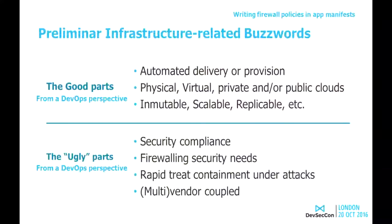From a DevOps perspective, the preliminary infrastructure-related buzzwords — the good parts — are that infrastructure can be automatically delivered and provisioned. We have a lot of tools for making it immutable by means of containers. We can apply several approaches, and we can have a lot of kinds of infrastructure like physical, virtual, and we can make a lot of combinations. So it's very cool. It's very cool from a DevOps perspective because we have a lot of tooling.